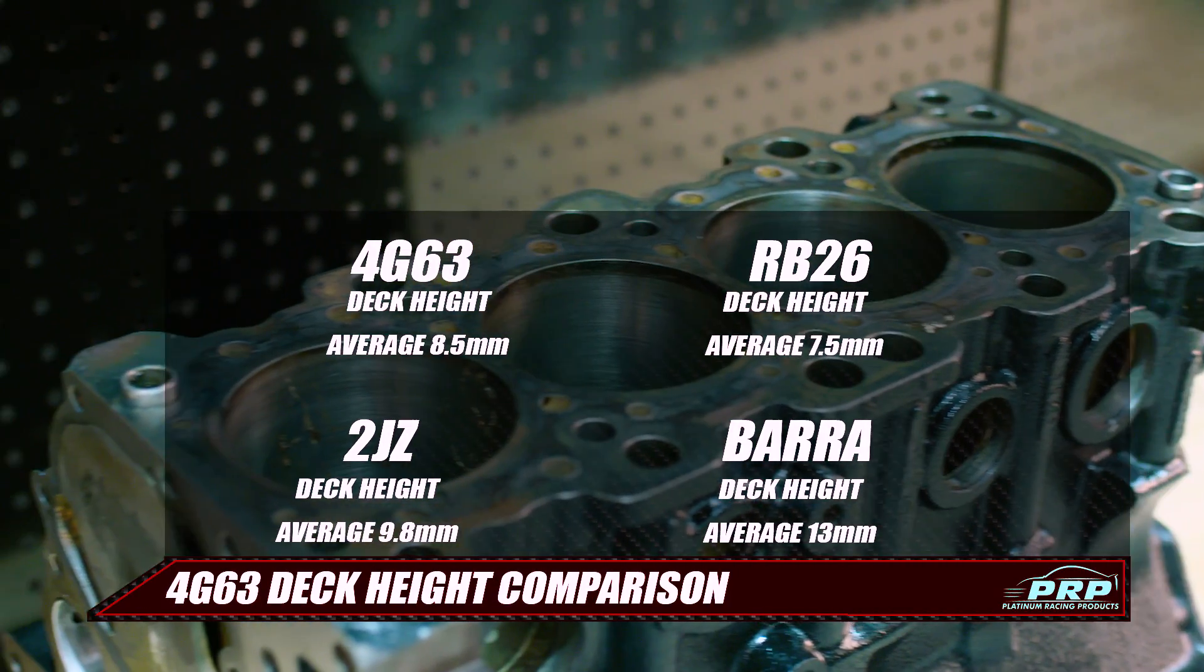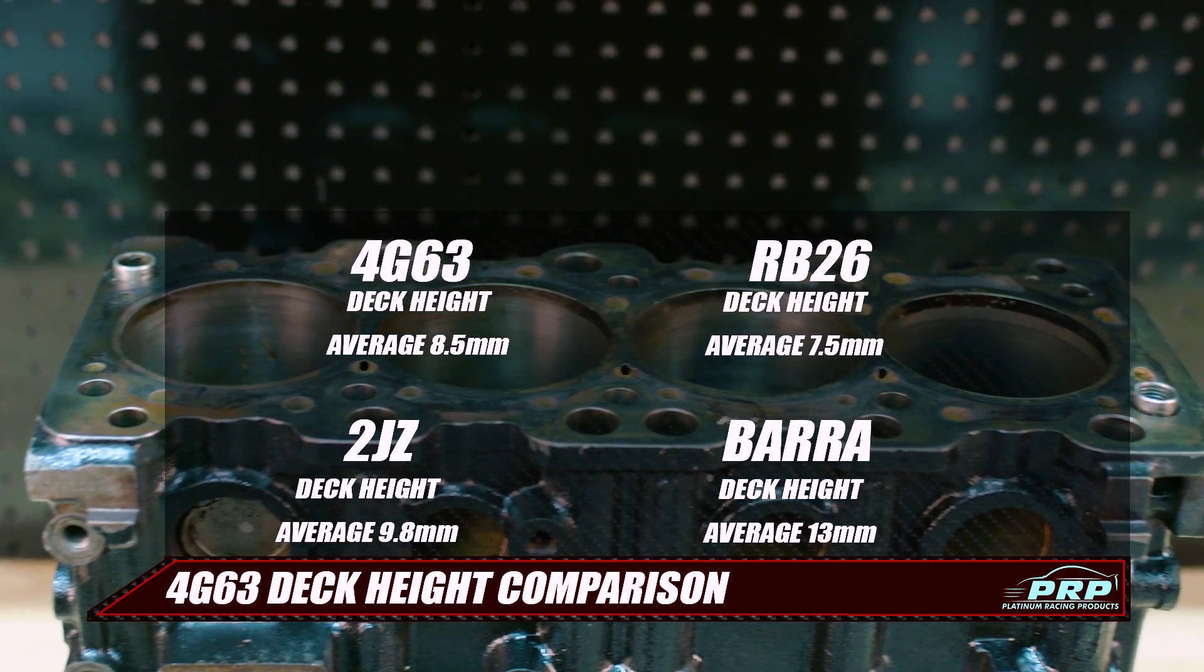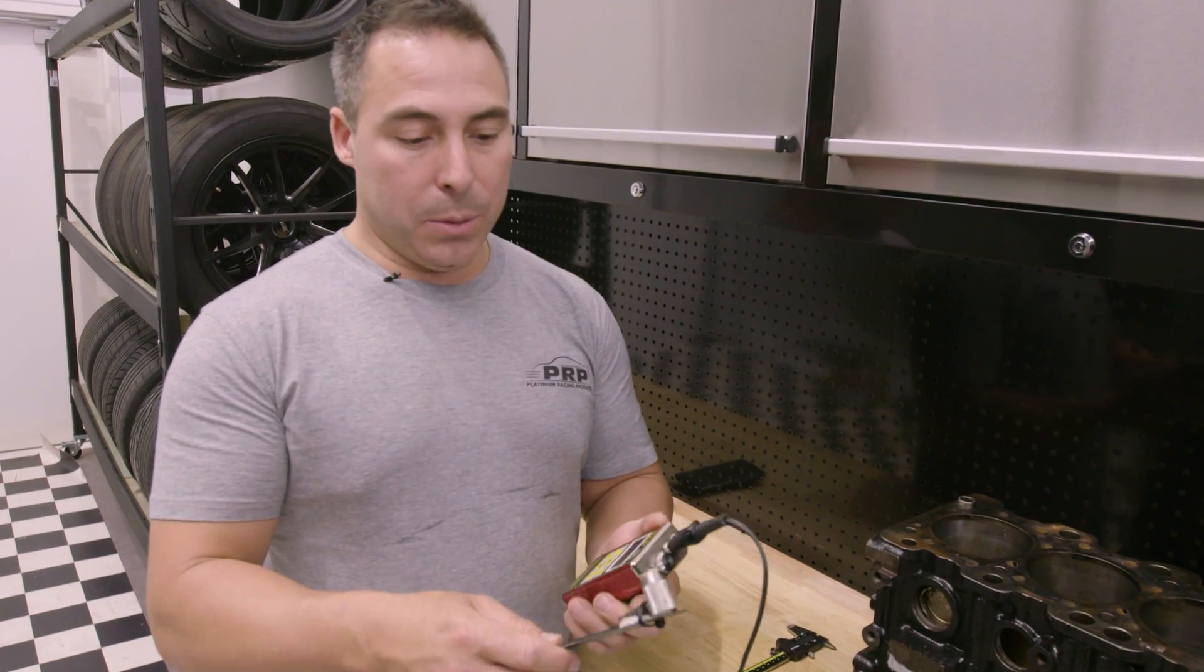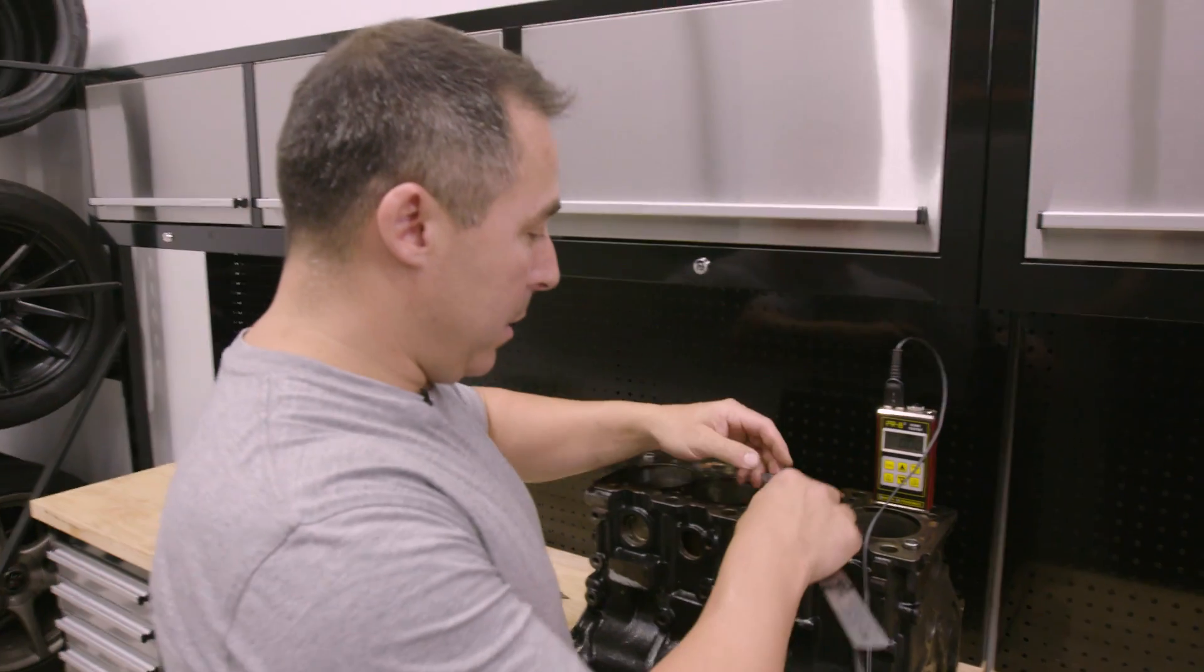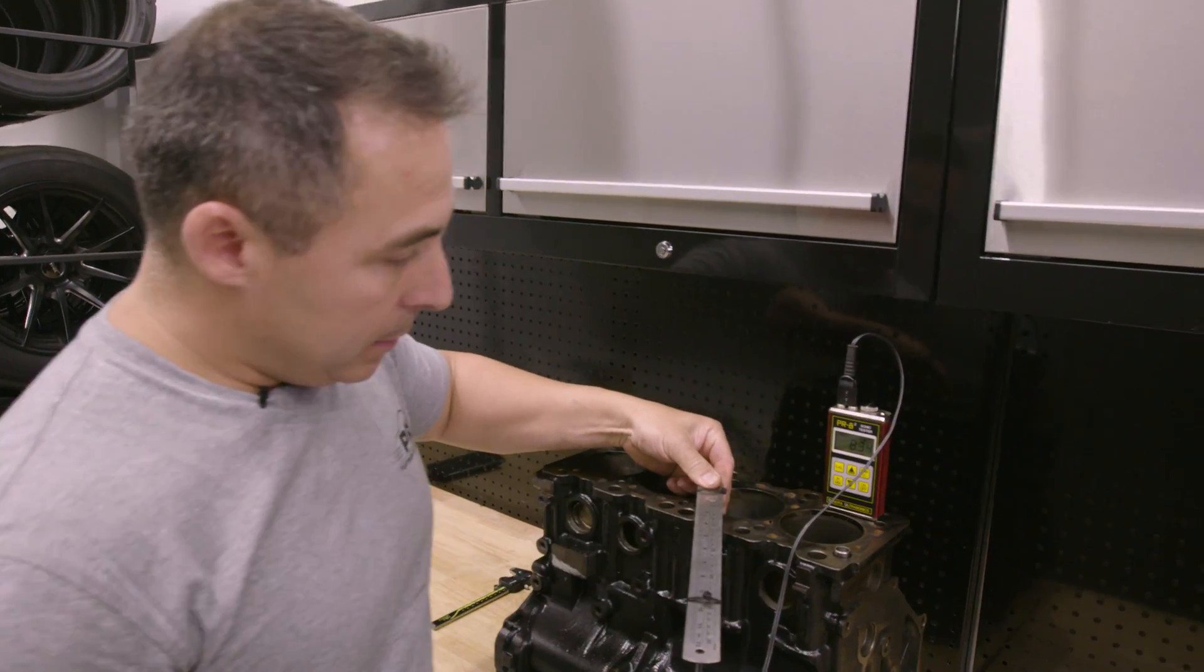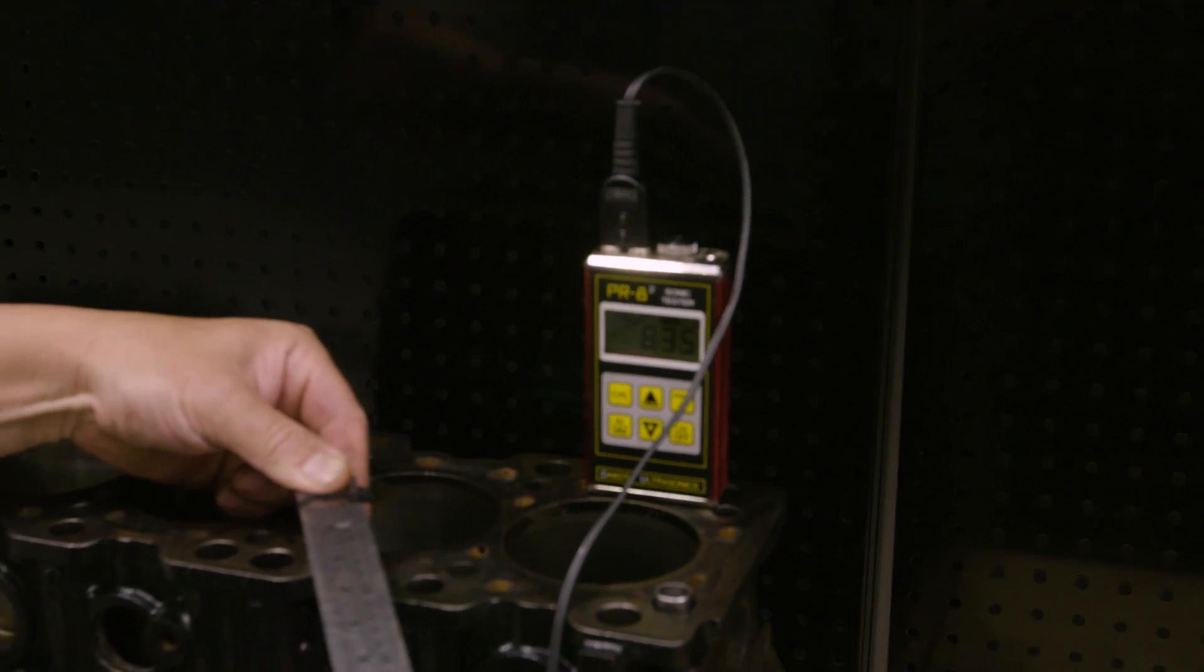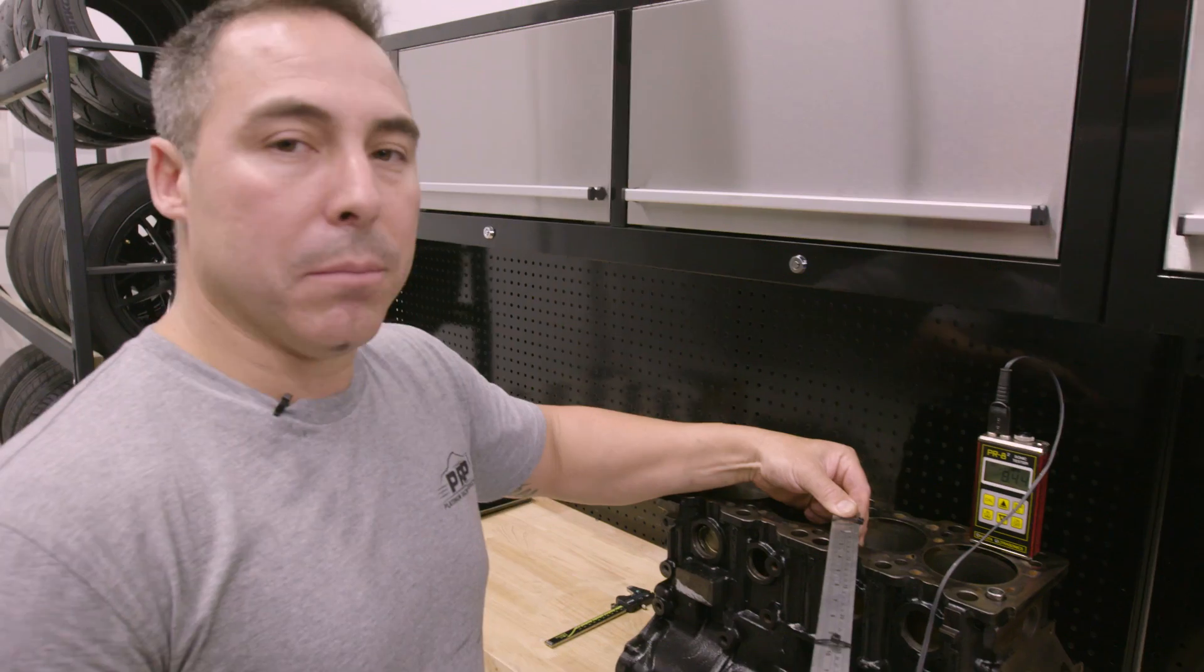Next test is deck thickness. We have an average of between 8mm and 10mm on pretty much all the blocks we've tested. This one I'm expecting it to be around the same. But you don't know until you try it. 8.5mm. So fairly consistent. It looks like 8 to 9mm is a standard OEM deck thickness type measurement.